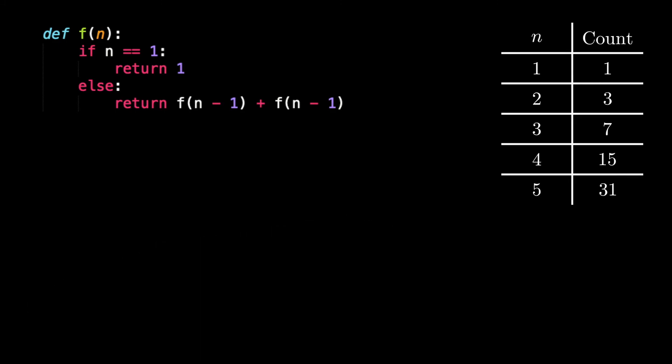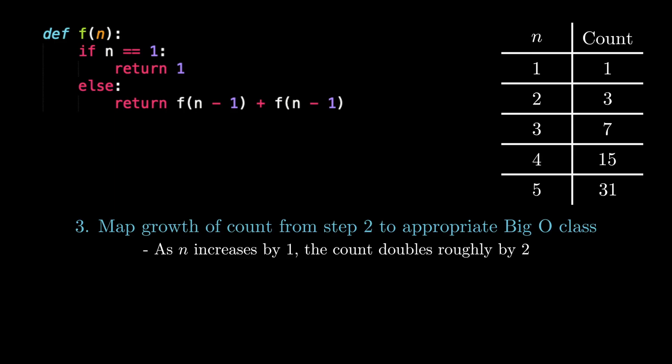All right, so now that we have a good understanding of how the counts work, let's see if we can map the count to an appropriate class of runtimes. There are a couple ways of doing this. One quick way is to utilize our earlier pattern to note that every time we increase by 1 the count roughly increases by a factor of 2. This is a classic indicator that we have exponential growth, specifically of the order of 2 to the power of n. Another more sound mathematical way to formalize this is that for any general n equals k our count is 2 to the power of k minus 1 which using our rules for Big O notation is O of 2 to the power of n.